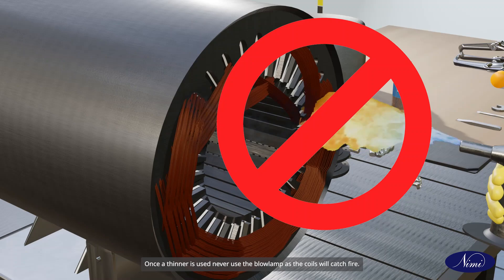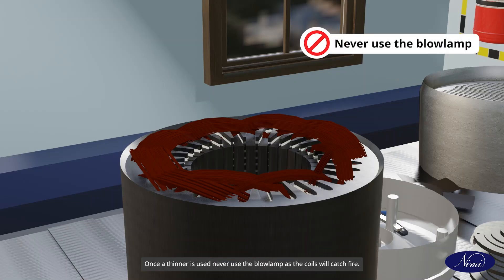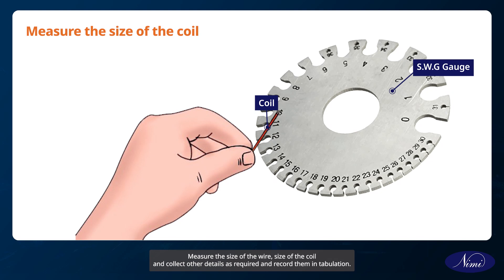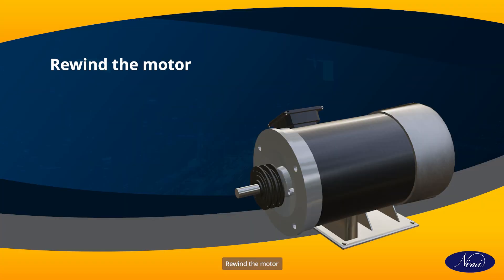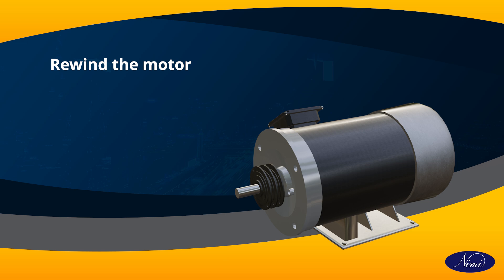Measure the size of the wire, size of the coil, and collect other details as required and record them in tabulation. Rewind the motor. Set the core if it is mangled and clean the slots.